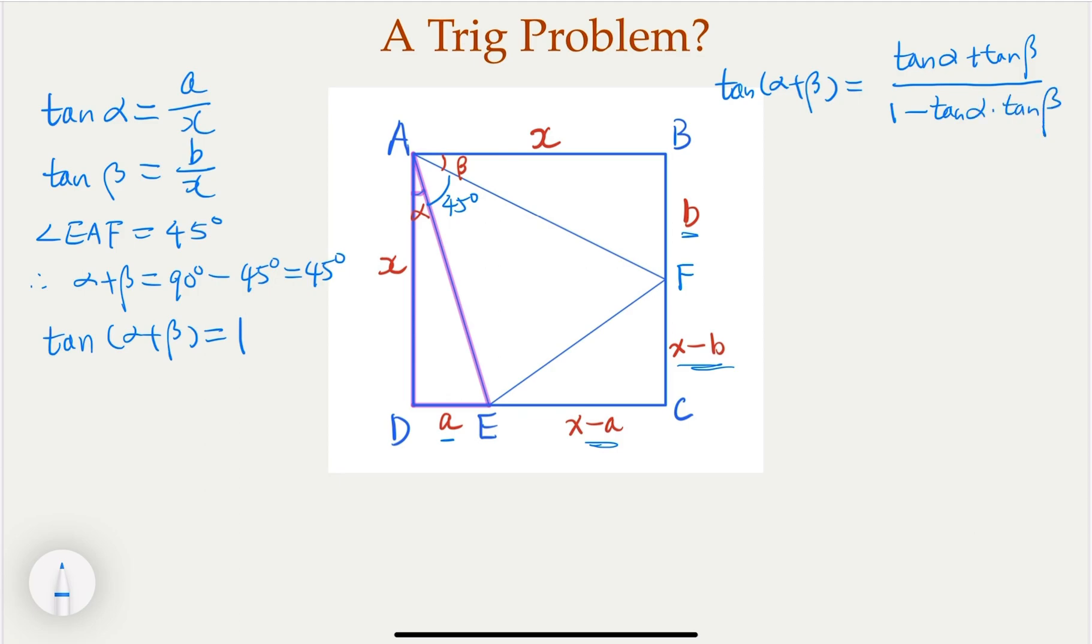We just need to plug in the fact that tangent alpha plus beta equals 1, so which means that 1 would equal to a over x plus b over x, divided by 1 minus a times b over x squared. That would be the condition that alpha plus beta equals 45 degrees.